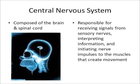The central nervous system is composed of the brain and spinal cord. It is responsible for receiving signals from the sensory nerves, interpreting information, and initiating nerve impulses to the muscles that create movement.